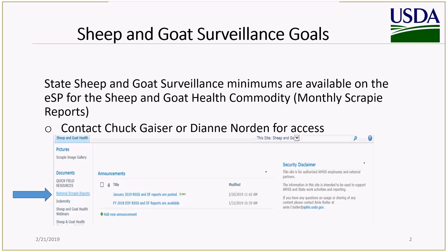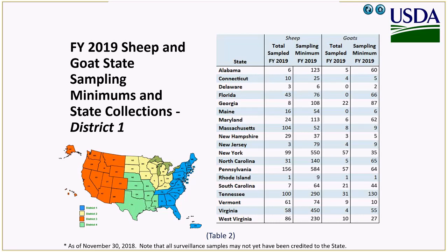To get to your surveillance minimums and to track your progress throughout the year, go to this website, and where I have the big blue arrow, go to the monthly Scrapie Reports. You can scroll through there and you'll get something that looks like this. This is for District 1. You can see how it shows your sheep and goat sampling minimums and how many samples have been collected with your tag state. That will help you track your progress as you go through the fiscal year.